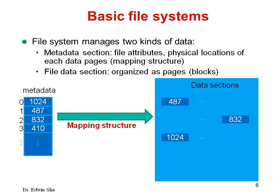A file system consists of two kinds of data: metadata and the physical file data. The metadata stores file attributes and the mapping from logical location to the physical location of each file data page. This mapping we call the mapping structure.